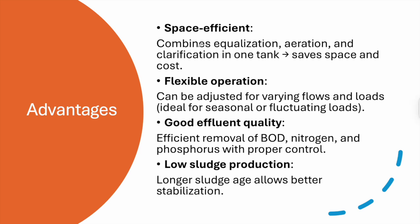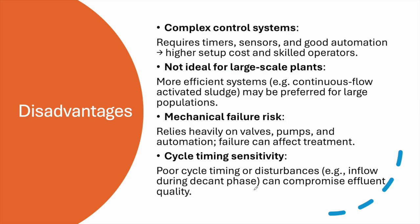The advantages of SBR include space efficiency — equalization, aeration, and clarification all occur in one reactor, saving space and cost compared to traditional activated sludge processes. It offers flexible operation, adjustable for varying flows and seasonal or fluctuating loads. It achieves good effluent quality with efficient BOD, nitrogen, and phosphorus removal with proper control. It also produces low sludge due to longer sludge age, allowing better stabilization.